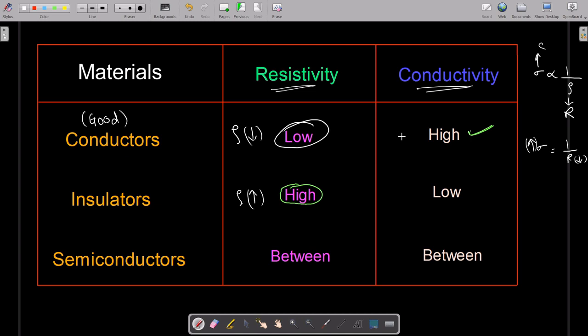Similarly, the conductivity for conductors is pretty high, and in case of insulators it is low. As you can see, an exactly opposite relation is observed.